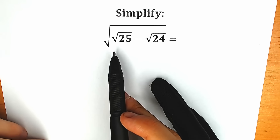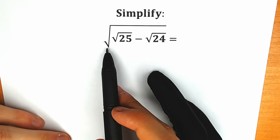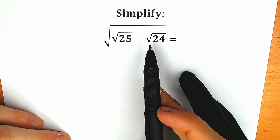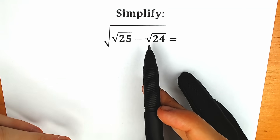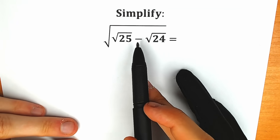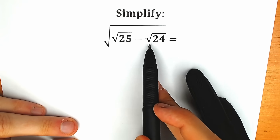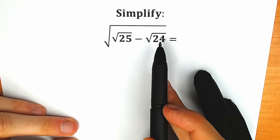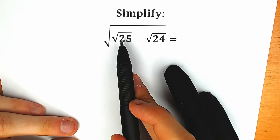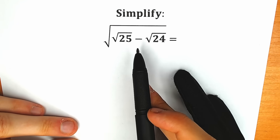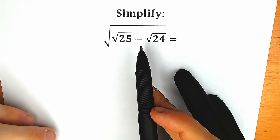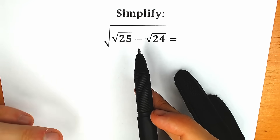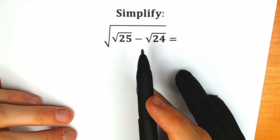We need to simplify this expression: square root of square root of 25 minus square root of 24. A lot of students might say: we have square root of 25 minus square root of 24, so 25 minus 24 equals 1, and square root of 1 equals 1. But this is incorrect — we need to solve this correctly, step by step.